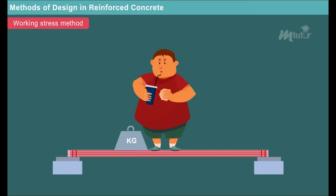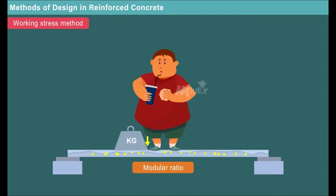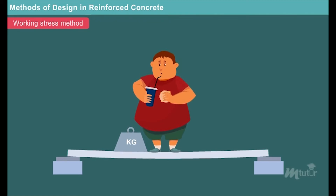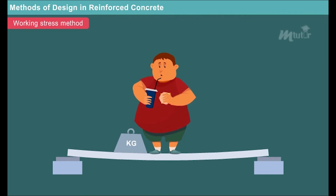This method assumes strain compatibility, where the strain in reinforcing steel is assumed to be equal to that of the adjoining concrete. Consequently, the stresses in steel are linearly related to the stresses in concrete by a constant factor called the modular ratio. Working stress method is the only method used to investigate the reinforced concrete section for service stresses and serviceability states of deflection and cracking.